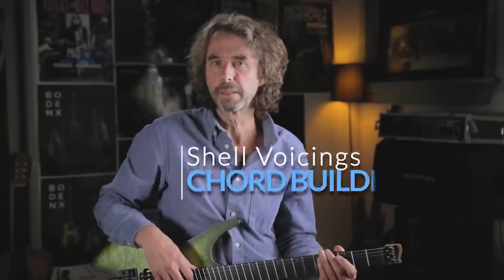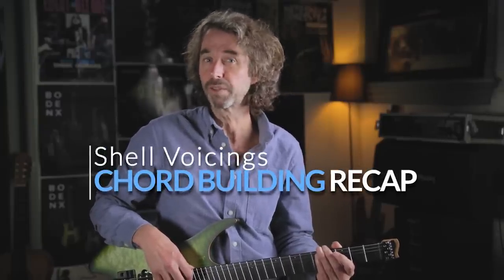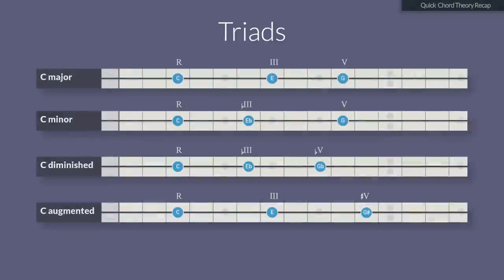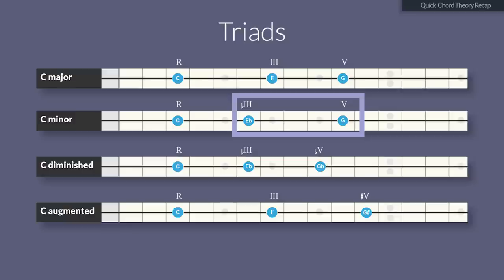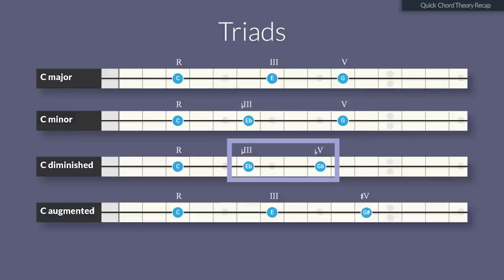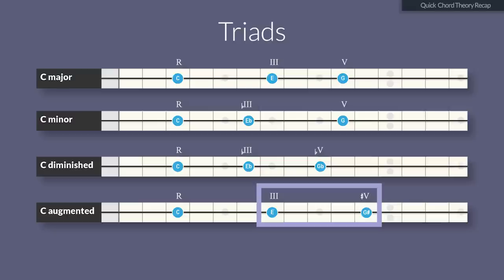There are four types of triads that produce seven types of 7th chords. Those triads are: the major triad, which has a major 3rd and a perfect 5th; the minor triad, which has a minor 3rd and also a perfect 5th; the diminished triad, which has a minor 3rd and a diminished 5th; and the augmented triad, which has a major 3rd and an augmented 5th. Here's the sound of the triads in a row so you can compare them.